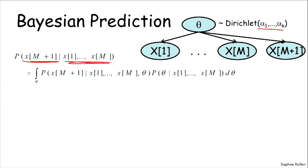And so we can once again plug that into a probabilistic inference equation. So this is going to be the probability of the m plus first data instance given everything including theta times the probability of theta given x1 up to xm. So we've introduced the variable theta into this probability and we're marginalizing out over the variable theta.